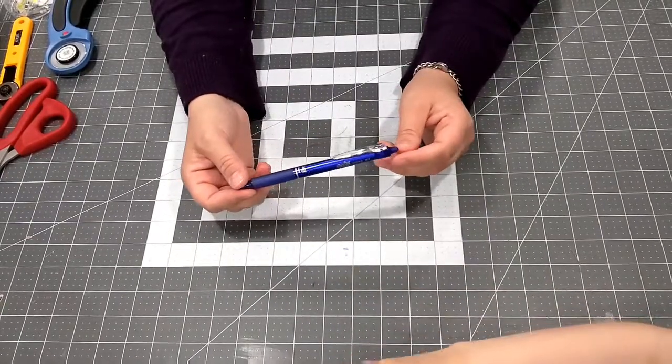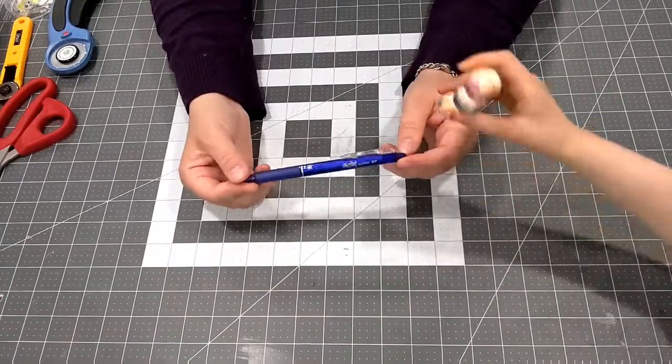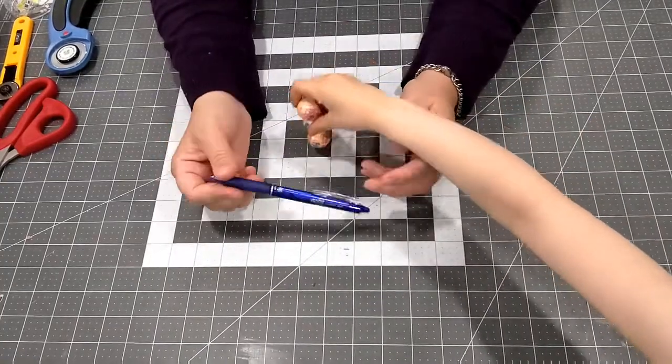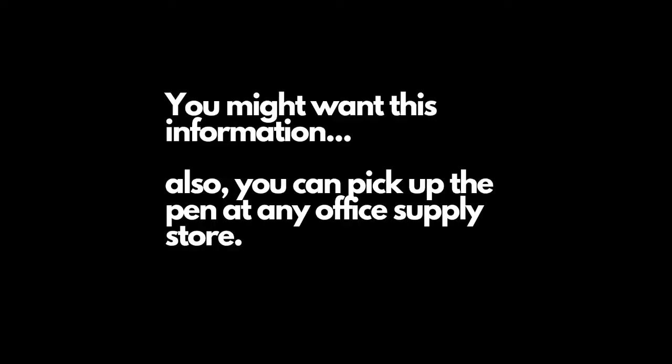Not selvage—the edge where the seam allowance is, so it'll trim away. Again, that gets used all the time. Oh, and the heat that you use to make the marks disappear is your iron. Whoops, forgot to mention that.